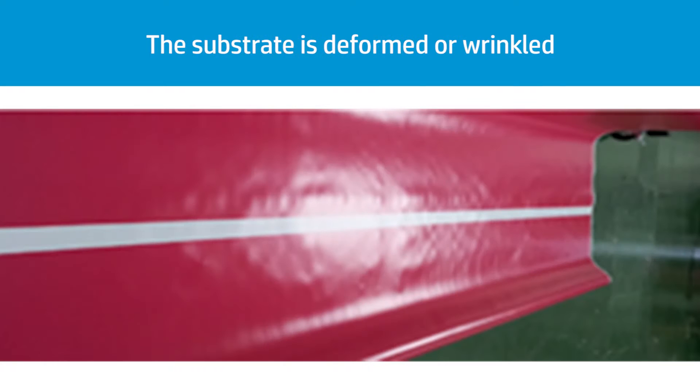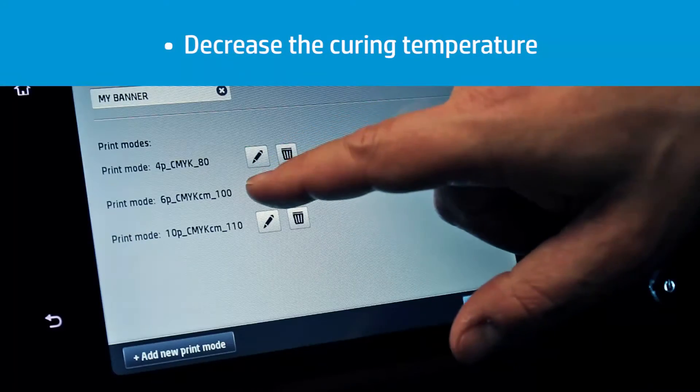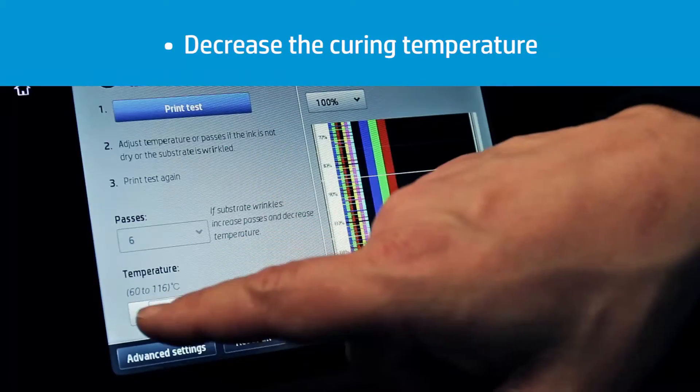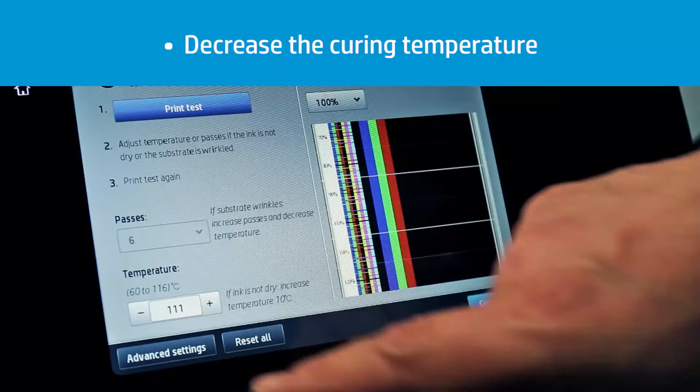If the substrate is deformed or wrinkled because of the curing process, decrease the curing temperature setting in the substrate presets in steps of 5 degrees Celsius, 9 degrees Fahrenheit.